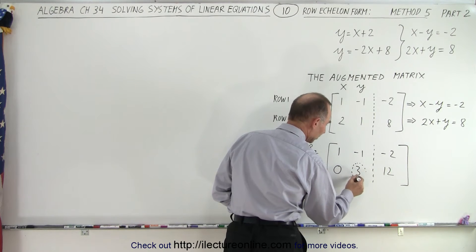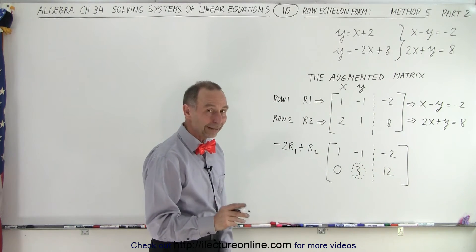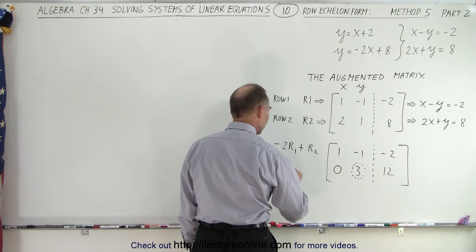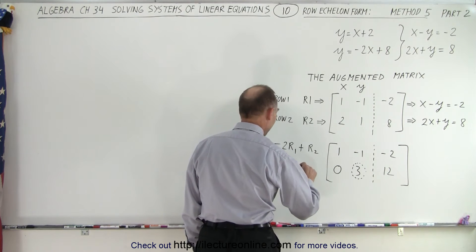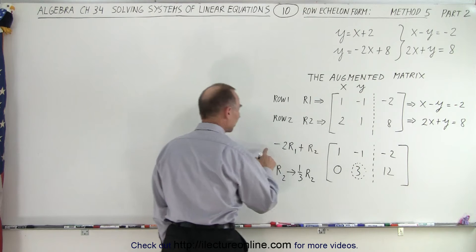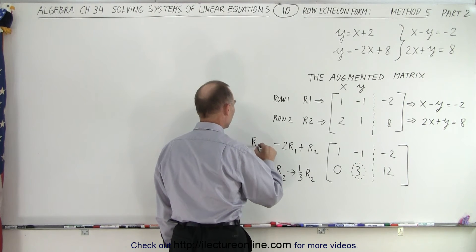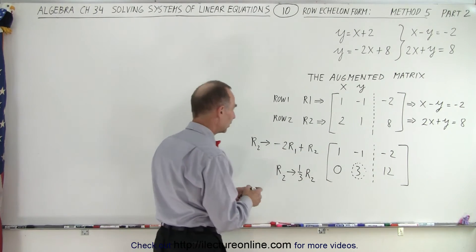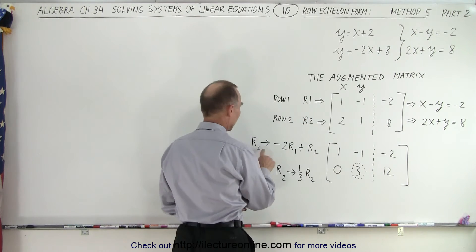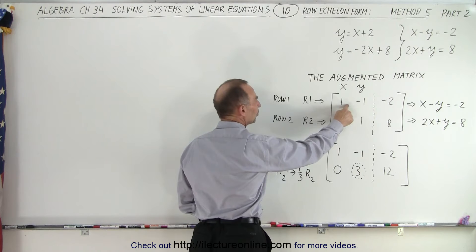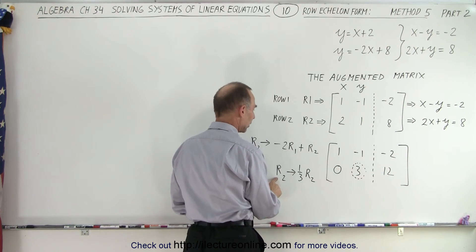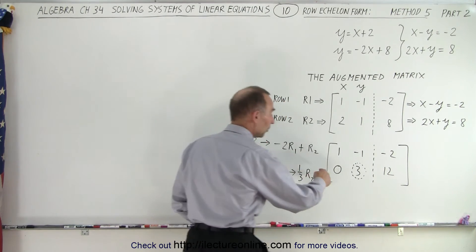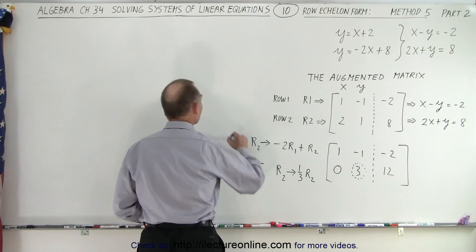So now I'm not quite there yet because I turned the 1 into a 3. I don't want a 3 there, I want a 1 there. So the next thing I'm going to do is take row 2 and replace it by 1/3 row 2. I should have made that clear. Here I'm going to take row 2 and replace it by -2 times r1 plus row 2. And here I'm going to take row 2 and replace it by a third of row 2. Essentially I'm going to divide every number in row 2 by 3.